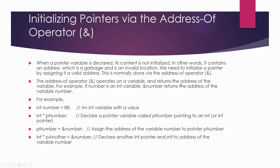The address-of operator operates on a variable and returns its address. For example, given 'int number = 88' and 'int* p_number', we can assign 'p_number = &number'. We can also declare another pointer 'int* p_another' and assign it the address of the same variable 'number'. Both pointers pointing to the same location is perfectly legal.